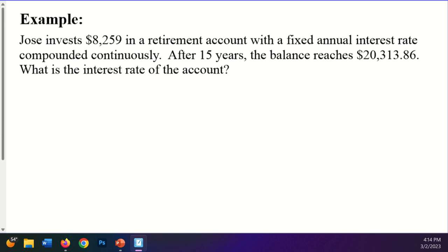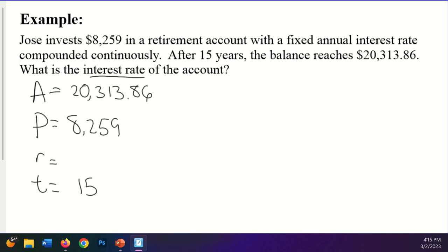When I look at an example like this, Jose invests $8,259 in a retirement account with a fixed annual interest rate, compounded continuously. Obviously after 15 years, the balance reaches $20,313.86. What is the interest rate of the account? So I'm going to just make a list. A equals PE to the RT. I'm going to make a list of all of those things that I know.